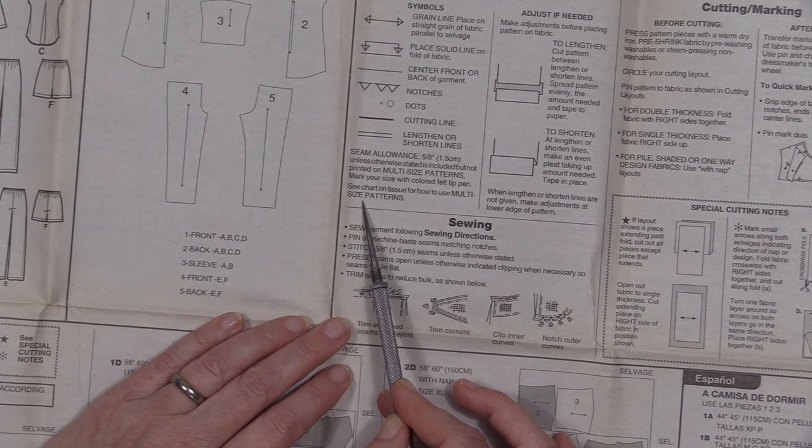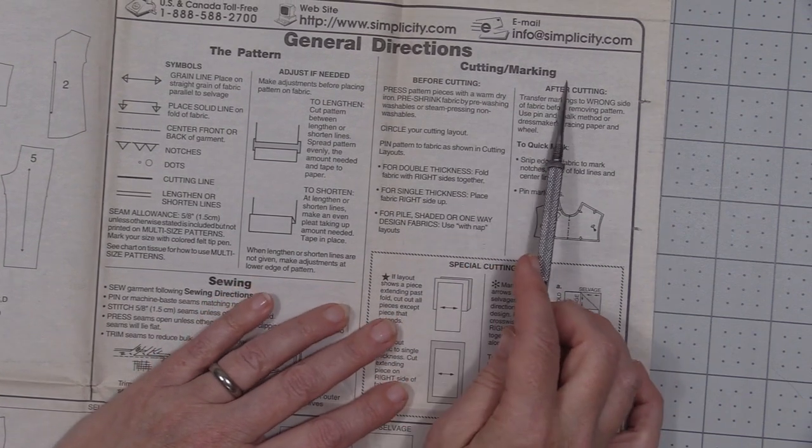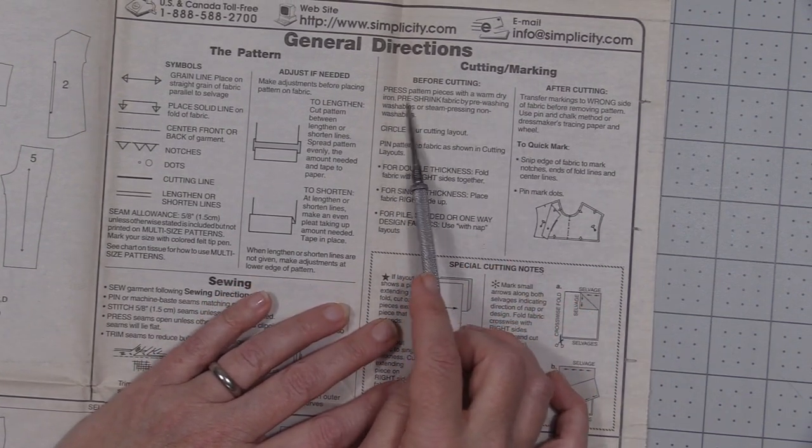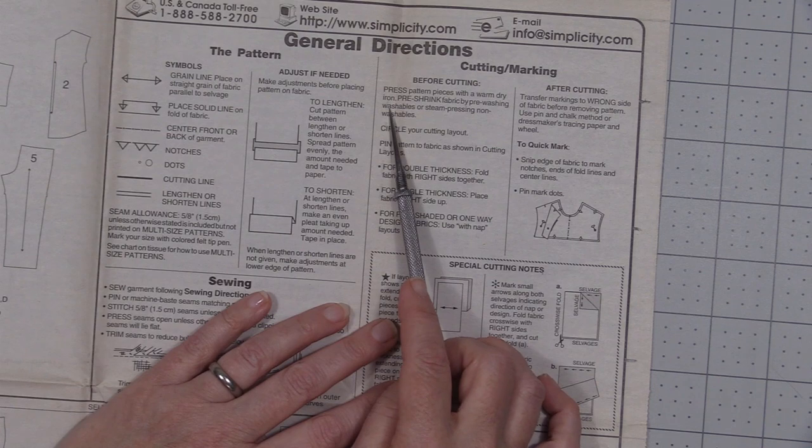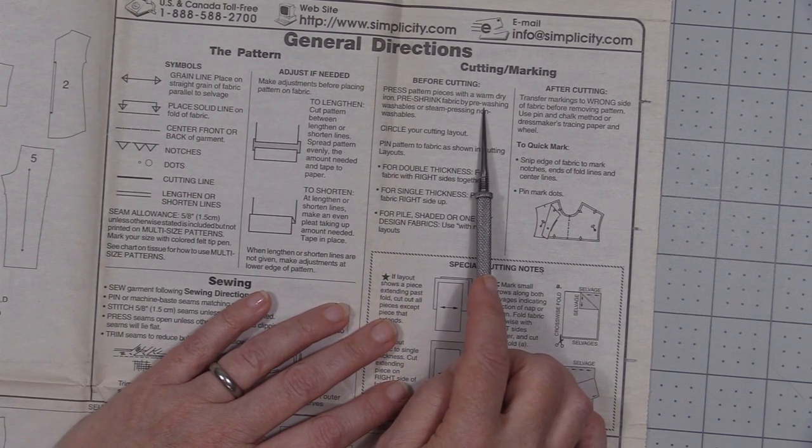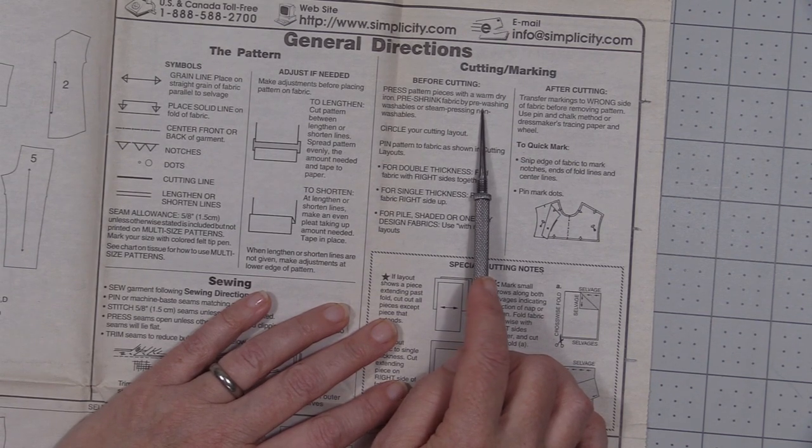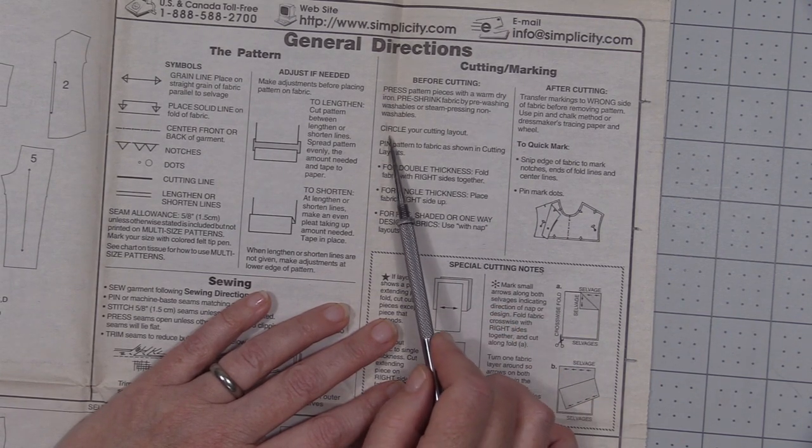Cutting and marking. Before cutting we want to press the pattern pieces with a warm dry iron, pre-shrink our fabric, and I have a post that I linked to in the first blog post that explained to you how to get your fabric ready. Circle your cutting layout.